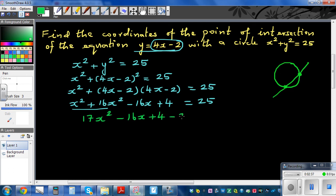I'm also going to take away 25 from both sides. Minus 25 = 25 - 25. So now this has become 17x² - 16x minus 4. Take away 25 is -21 = 0.